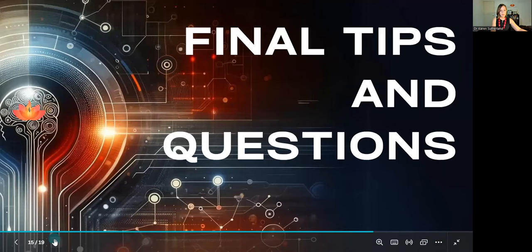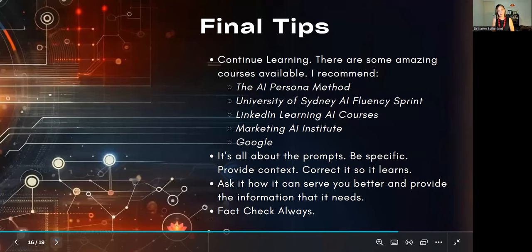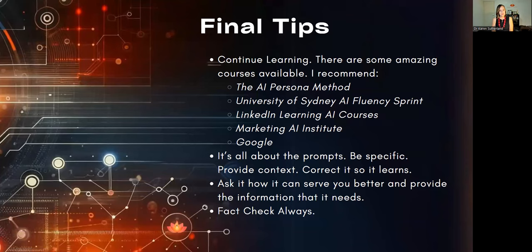Now for some final tips. AI is moving so quickly and there's always new things to learn, so I recommend just keep learning. There are many courses available — some are expensive, some are not, and there are free ones online as well. The AI persona method is not free, but very useful in helping you come up with a really specific, targeted way of using AI. Once you've primed it that way, it's almost like having another member on your team, and it's much easier to get the best out of it.